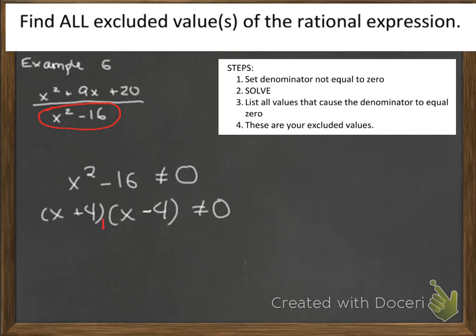Now because we have two linear terms here, we can apply what's called the 0 product property. Meaning that the only way for x plus 4 times x minus 4 to be equal to 0 is if one of these two terms, either x plus 4 or x minus 4 is itself equal to 0. So we have two one-step equations to solve.